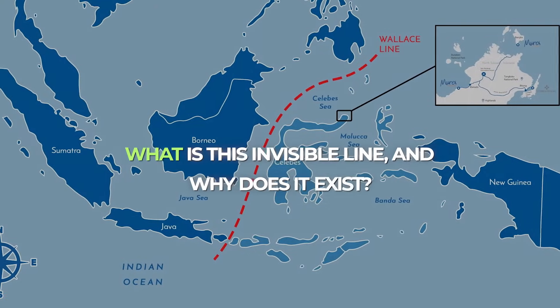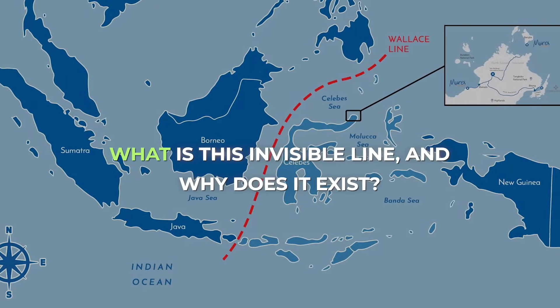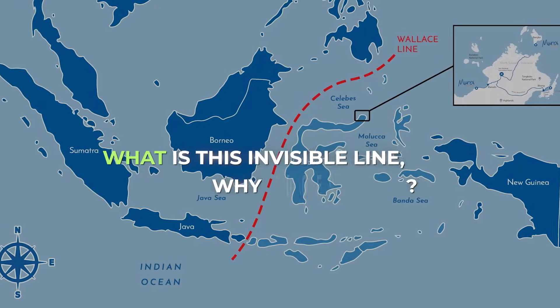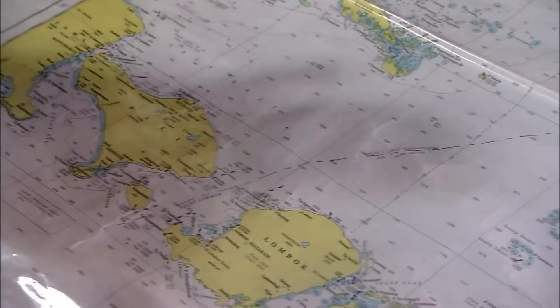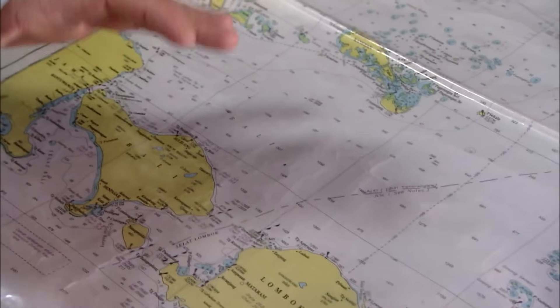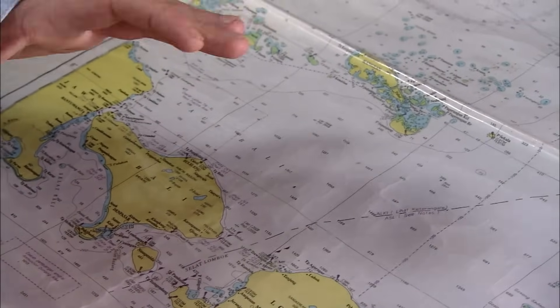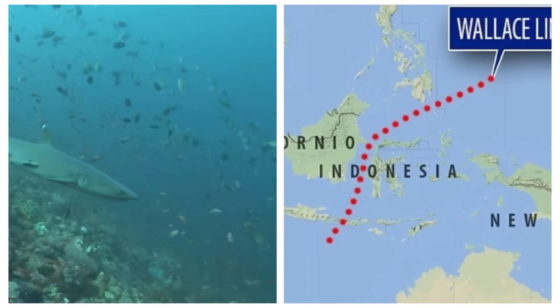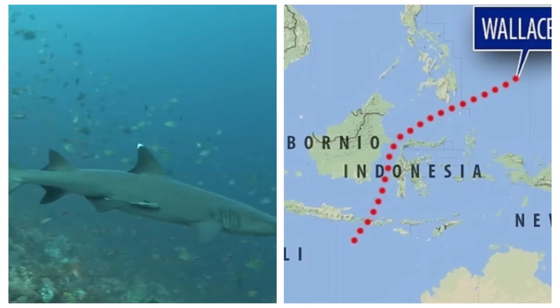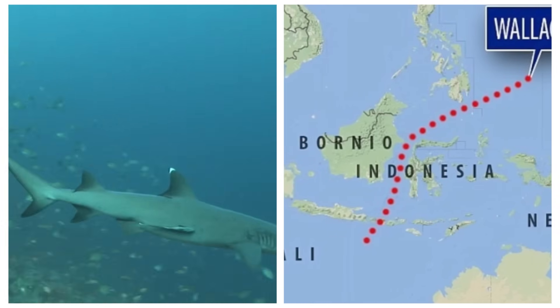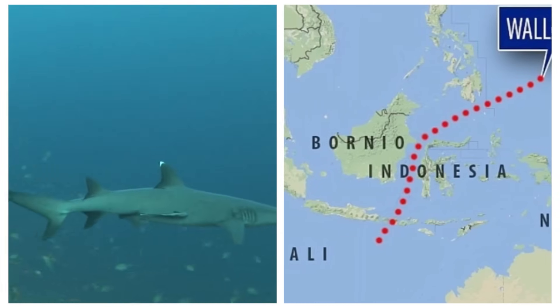So, what is this invisible line, and why does it exist? In this video, we'll explore the science behind the Wallace Line, its historical background, why it happens, and how it divides the animal kingdom.